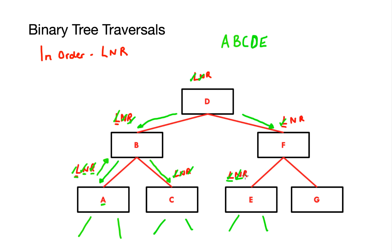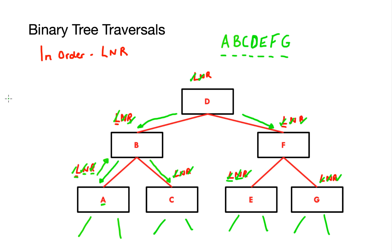The next step at F is to take the node itself, so I write F down in my list and then traverse the right subtree. I rewrite my rule at node G. I check the left subtree — non-existent. I then move to my node rule and write down G in my list. Finally I check the right subtree — non-existent. Once completed I move back up and tick the R rule off at node F, then move back up to D and tick the R rule off at D. The final in-order result is A, B, C, D, E, F and G.